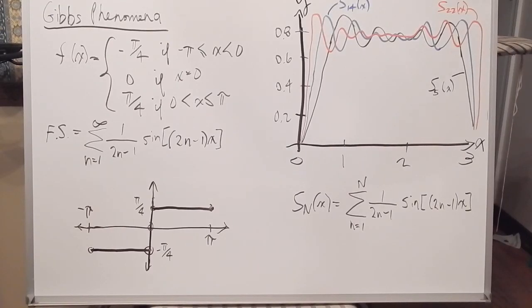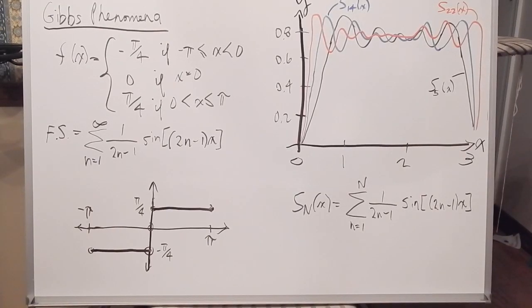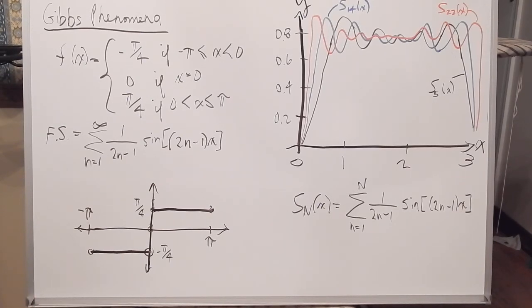This is my one minute movie explaining the Gibbs Phenomena of a piecewise continuously differentiable periodic function at a jump discontinuity.